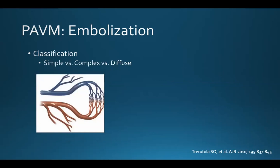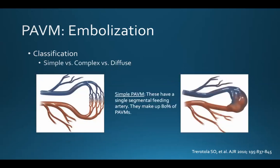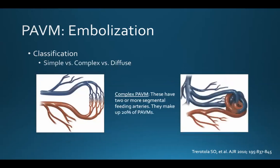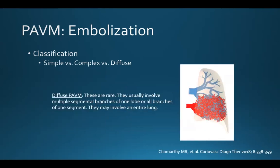Pulmonary AVMs are often classified as simple, complex, or diffuse. In a simple PAVM, there's a single segmental feeding artery, and these make up 80% of PAVMs. Complex pulmonary AVMs have two or more segmental feeding arteries and make up about 20% of PAVMs. Diffuse PAVMs are very rare — they usually involve multiple segmental branches of one lobe or all branches of one segment, and can even involve an entire lung.